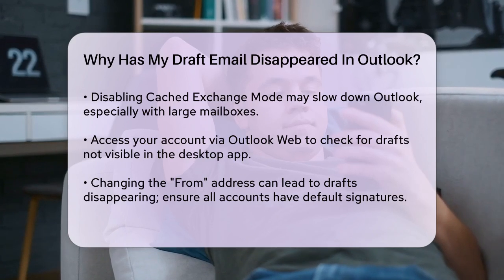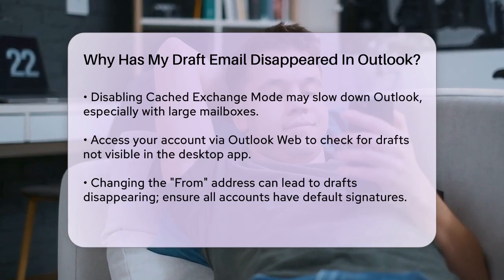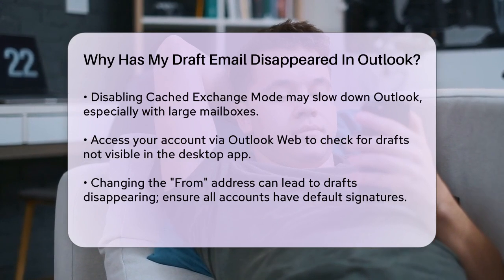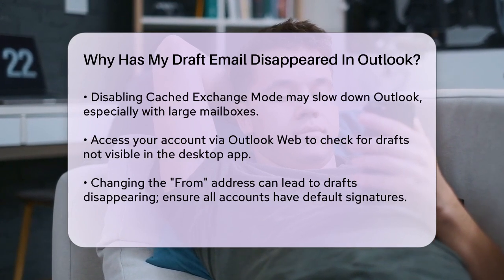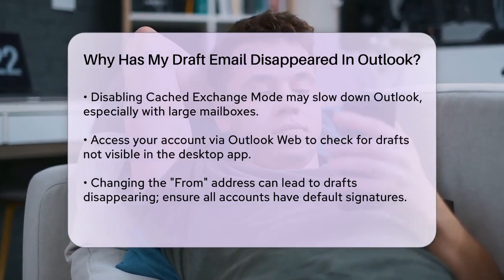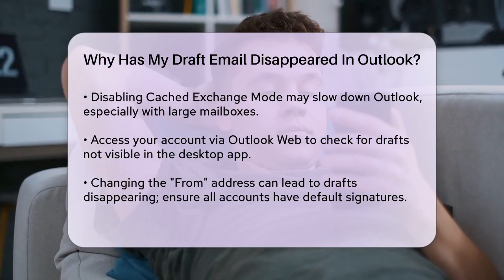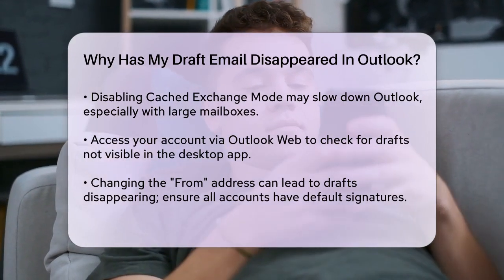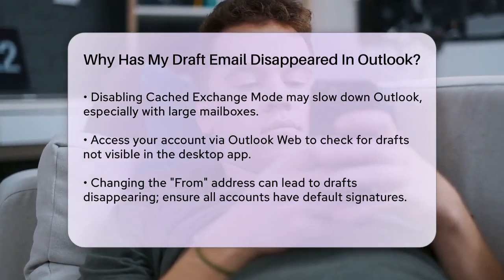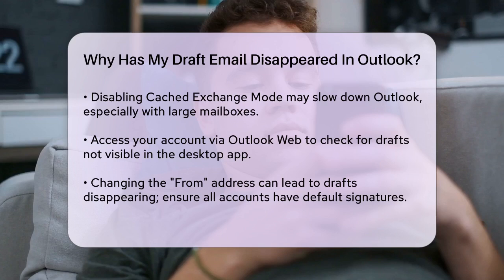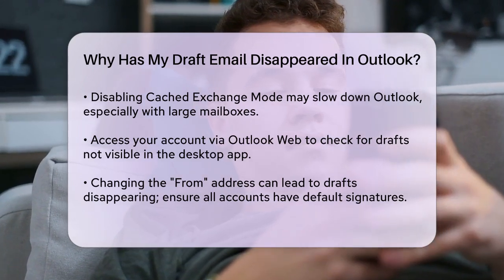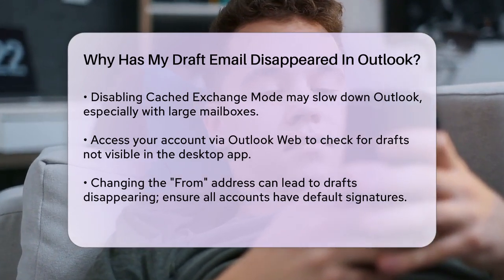Changing the From address in the email window can also cause issues. If you have multiple email accounts connected to Outlook and switch between them, the text of your draft might disappear. This is often due to a missing default signature for one of the email accounts. To avoid this, ensure each account has a default signature set up.